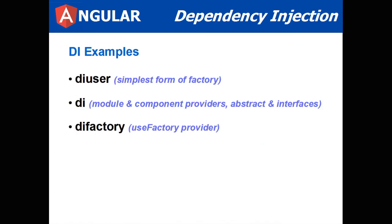Let's go to some examples. We're going to cover three: one is a simple dependency injection of a user service which gets a user — the simplest form. Another DI example talks about component providers and module providers, and briefly covers how you can use abstract classes or interfaces in your injection. And then there is a factory provider example. Let's move to the next tutorial which will describe the code.